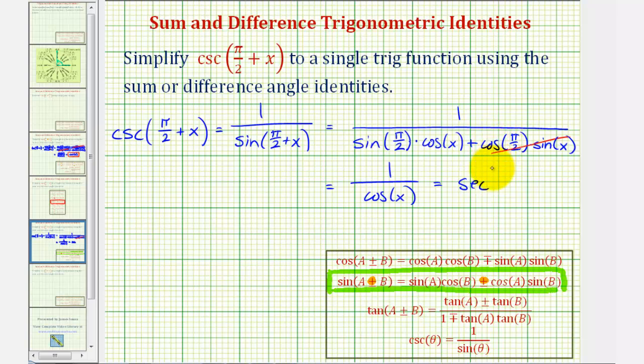Remember, the secant function and the cosine function are reciprocals of one another. So now we have the given expression as a single trig function. I hope you found this explanation helpful.